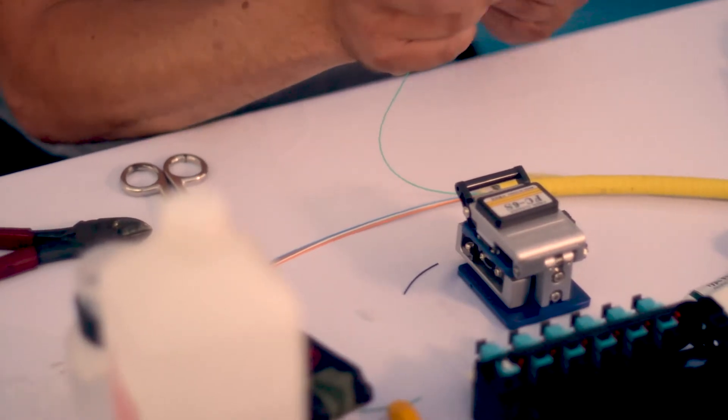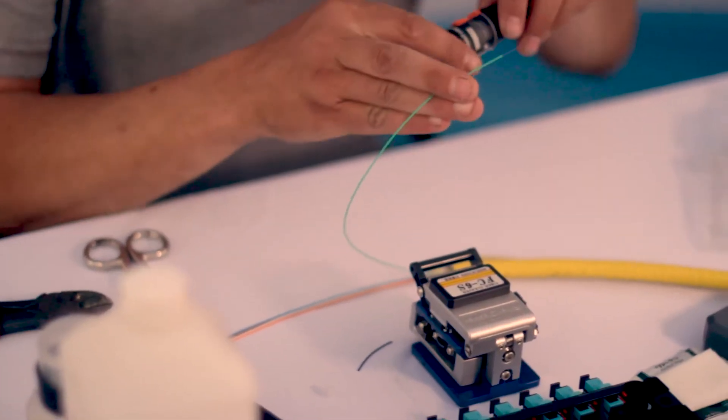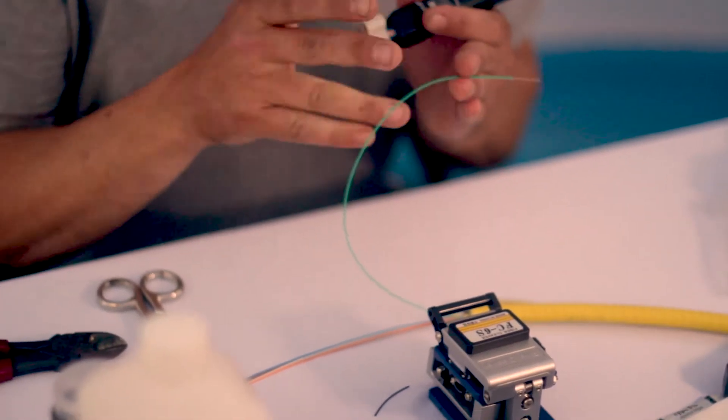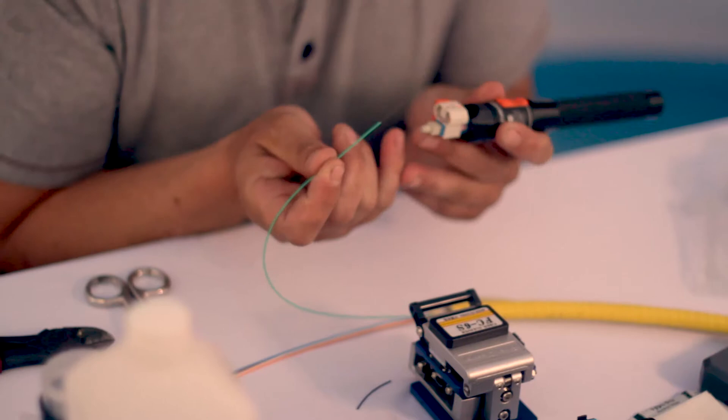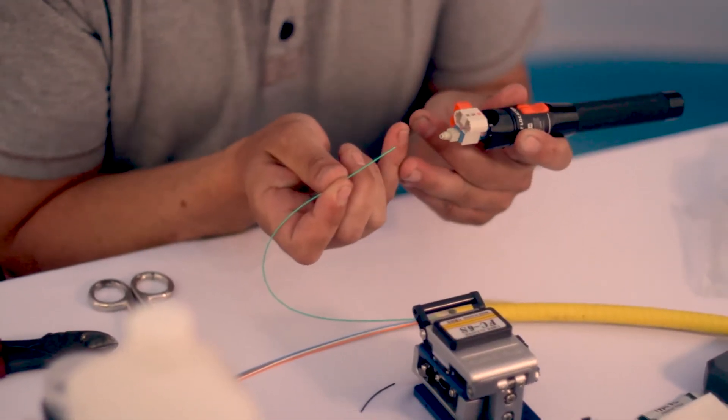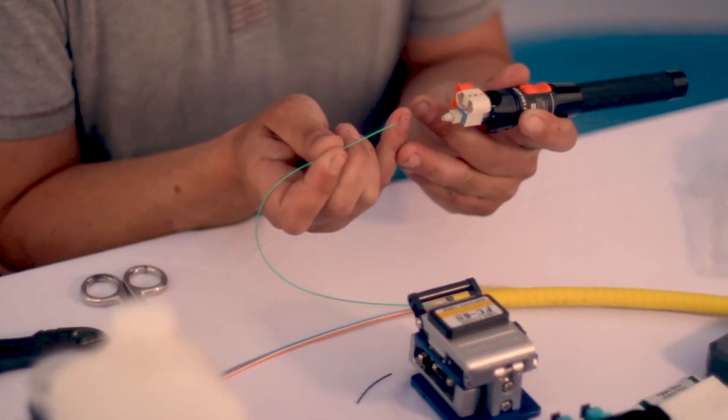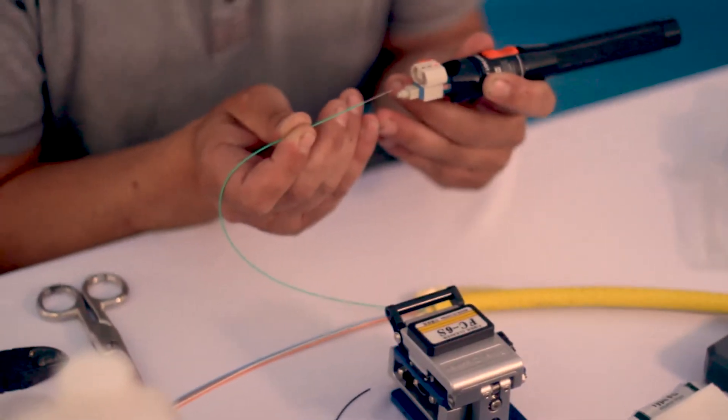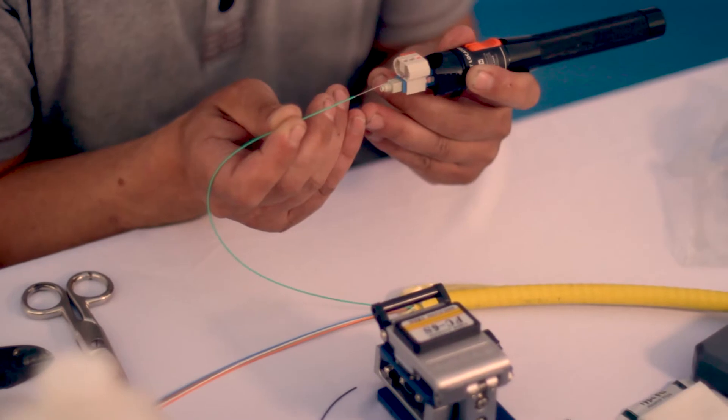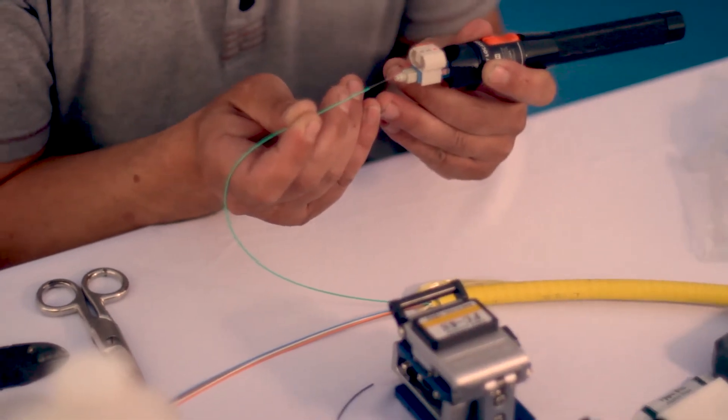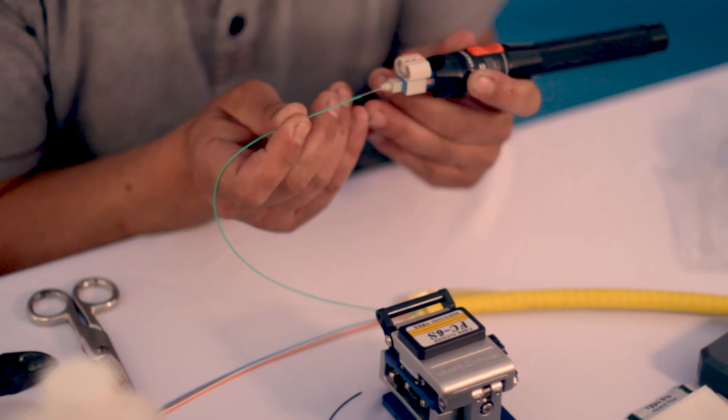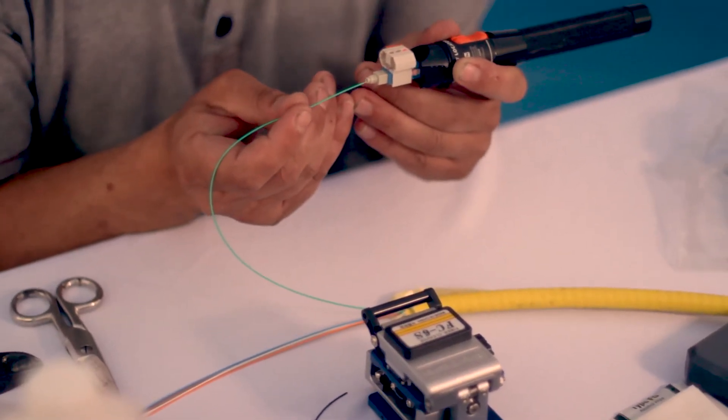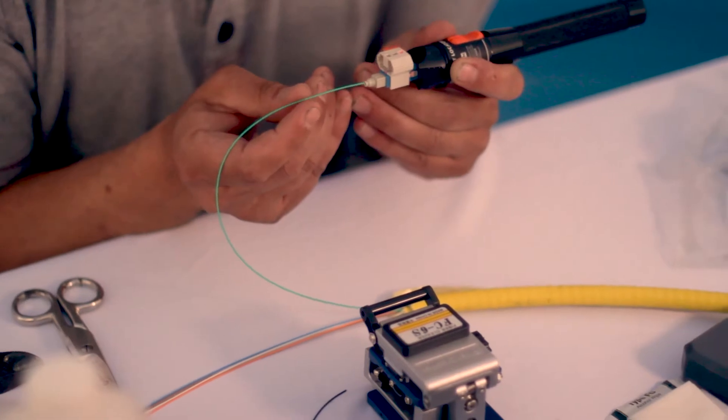All right, sometimes this takes a couple different hands, but I usually am able to do it two-handed. All right, let's go ahead and start inserting our fiber. Now it's been stripped, cleaved, clean, and we're now putting it into the body of the connector. And it can be hard, it's like threading a needle. If you have problems just give it a little twist until it goes in.